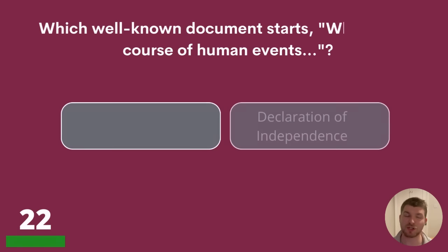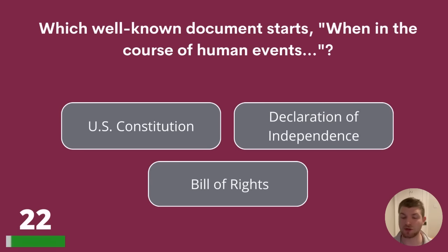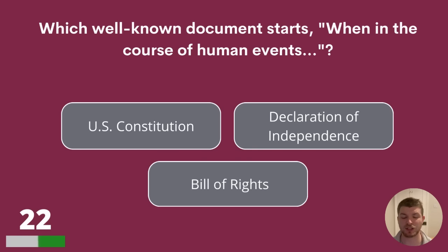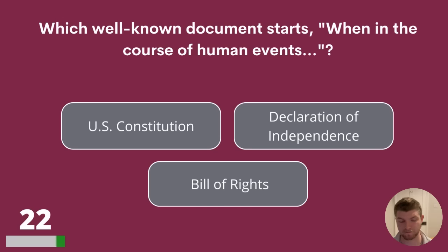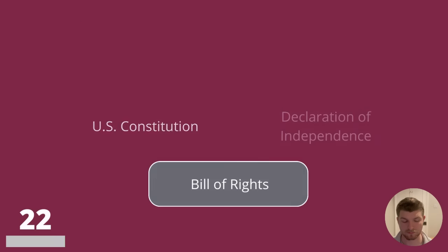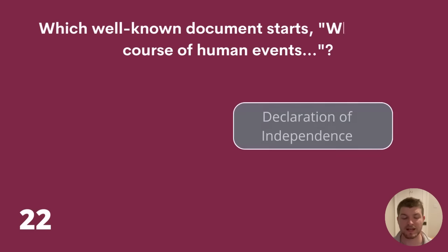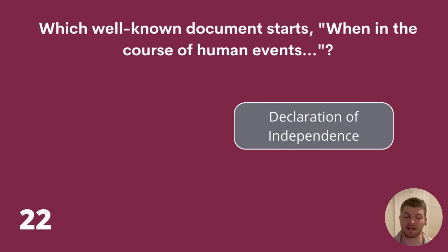Question 22. Which well-known document starts with 'When in the course of human events'? Is it the US Constitution, Declaration of Independence or the Bill of Rights? The answer is the Declaration of Independence.